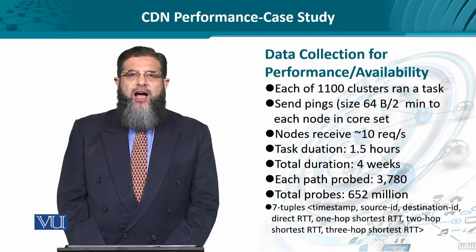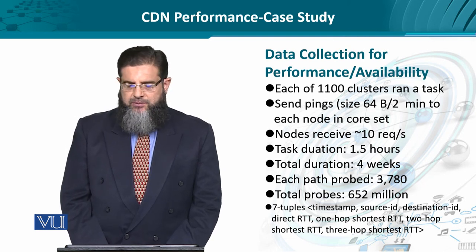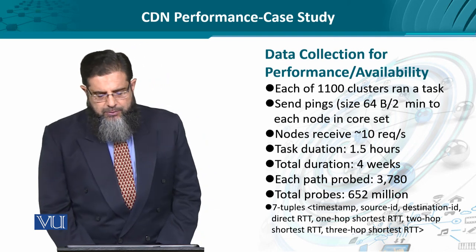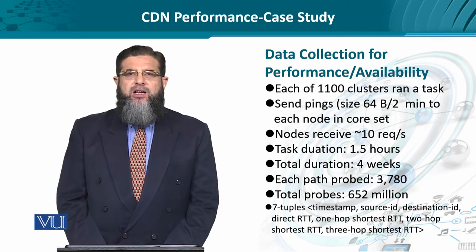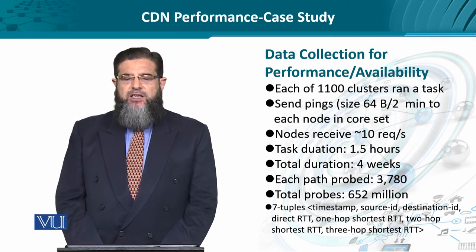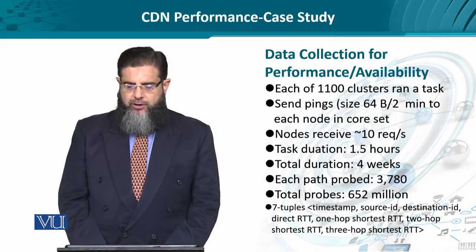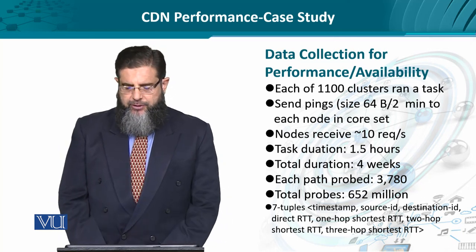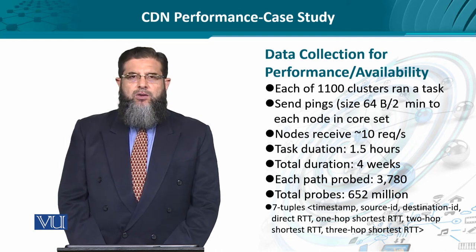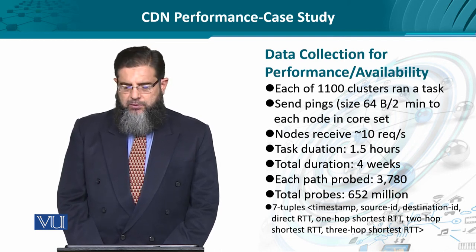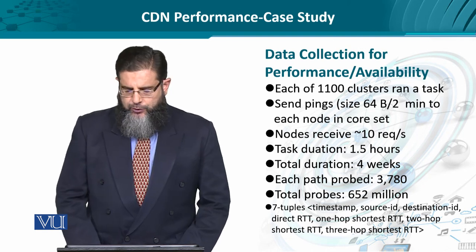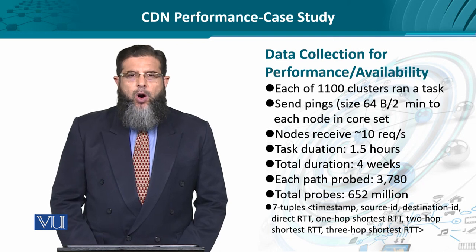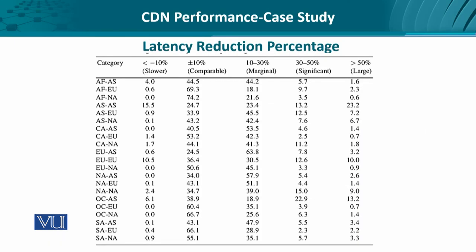This data is reliable and can be banked upon. The overall findings were represented as tuples that included timestamping, identifiers of source and destination, the direct round trip time, the one-hop shortest round trip time, and the three-hop shortest round trip time. Three-hop shortest round trip time means the indirect paths go through up to three hops instead of a direct trip — illustrating how overlay networking operates across edge and core clusters.